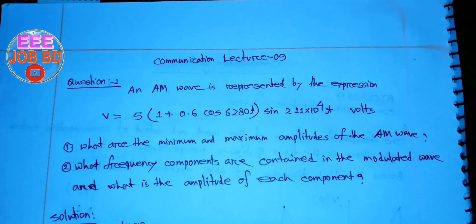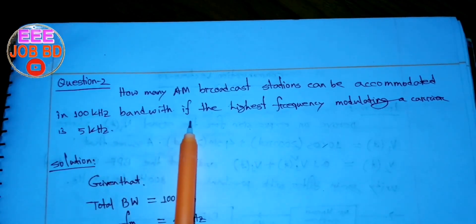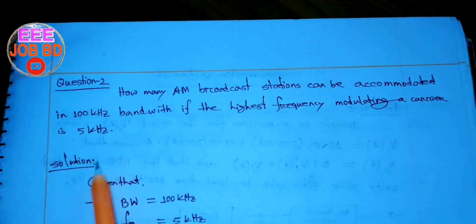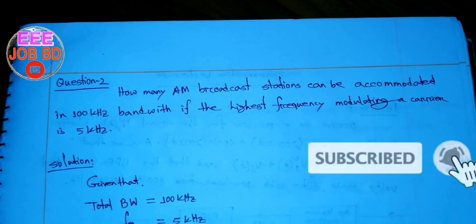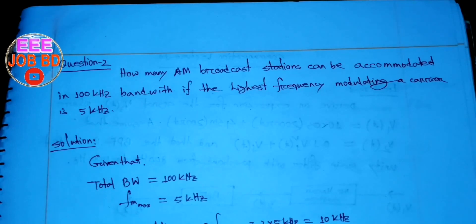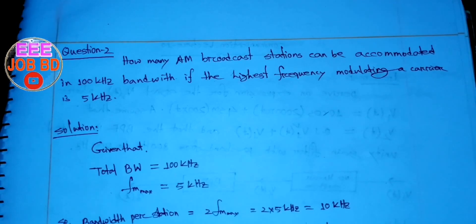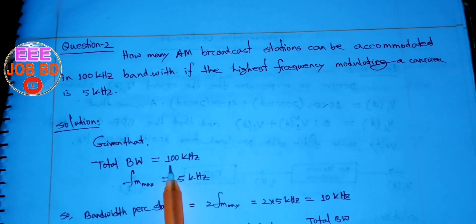This is very simple — just a similarity check to see how many AM broadcast stations can be accommodated in a 100 kHz bandwidth. If the highest frequency modulating the carrier is 5 kHz, and the carrier station uses 100 kHz, the first station is accommodated within a channel bandwidth of 100 kHz.